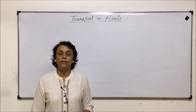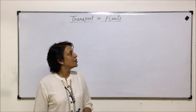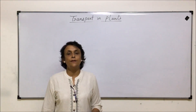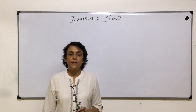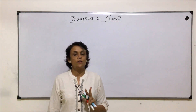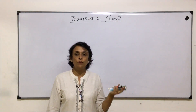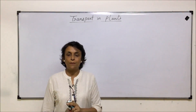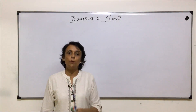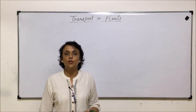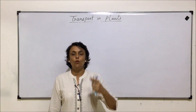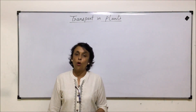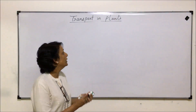We are on the last part of this chapter on transport in plants. Up till now we have seen the transport of water in two parts: one was when it is taken from the soil by root hair up to the xylem, and then ascent of sap with the help of various forces like transpiration pull, and how it goes up to the top portions. Now here we are talking about movement of food.